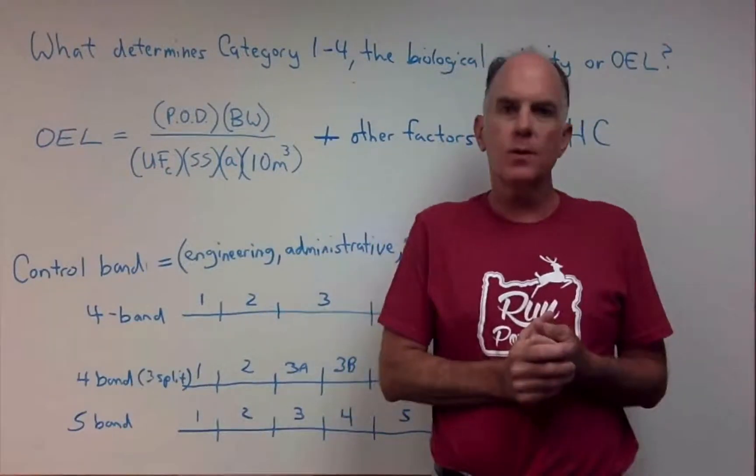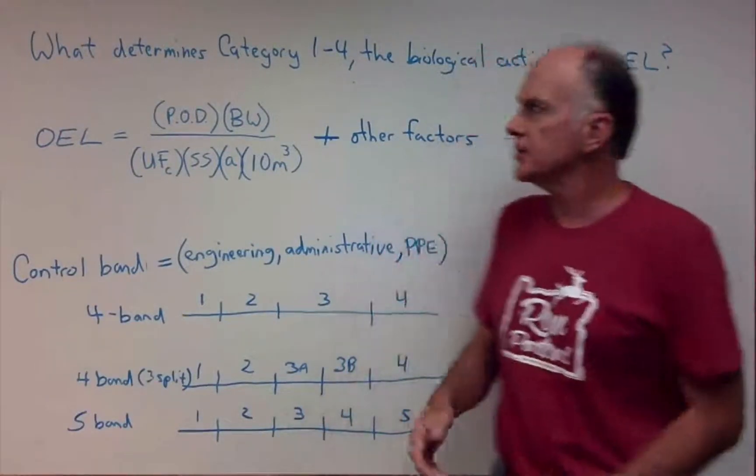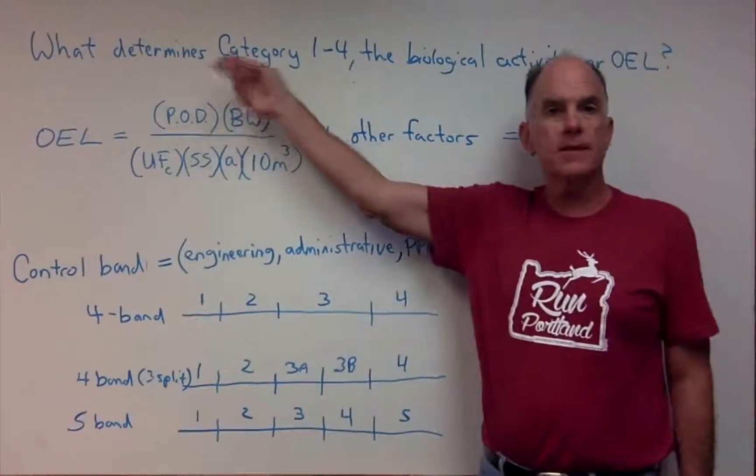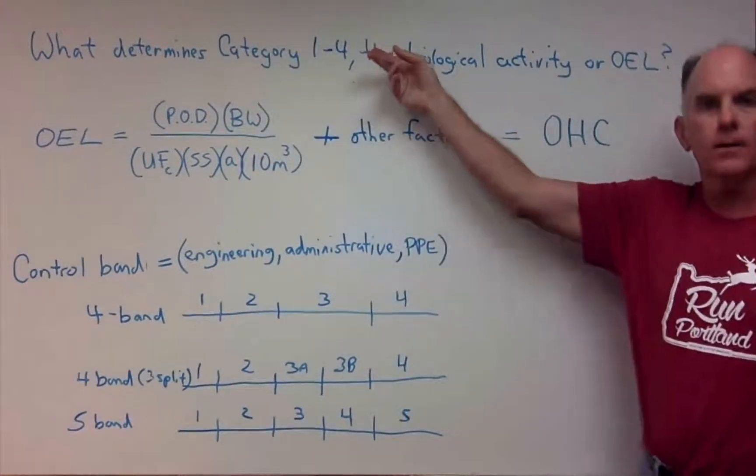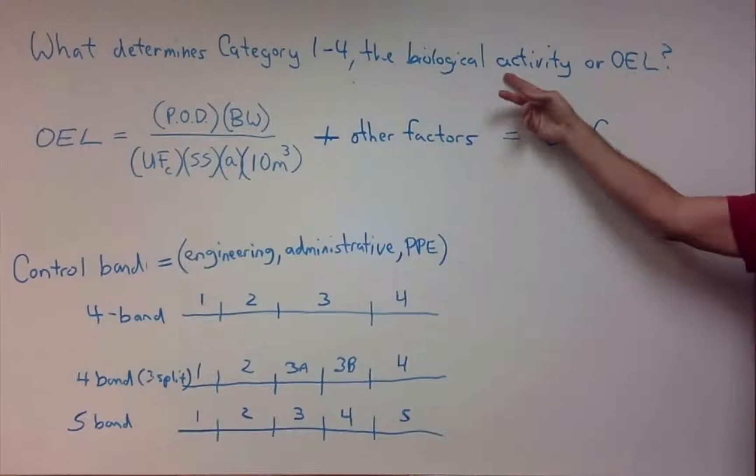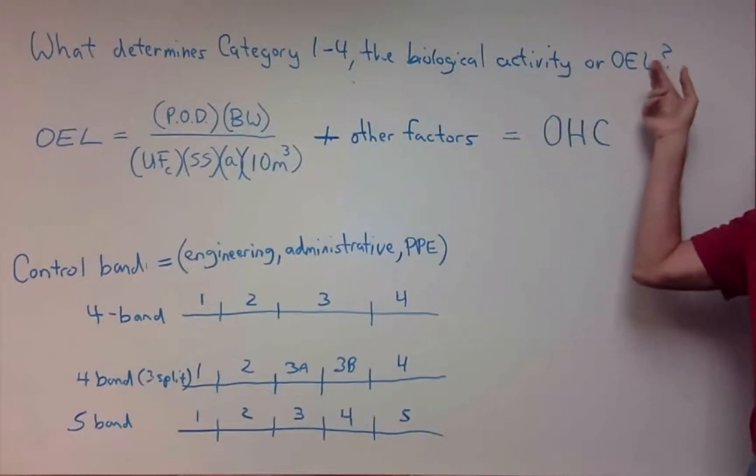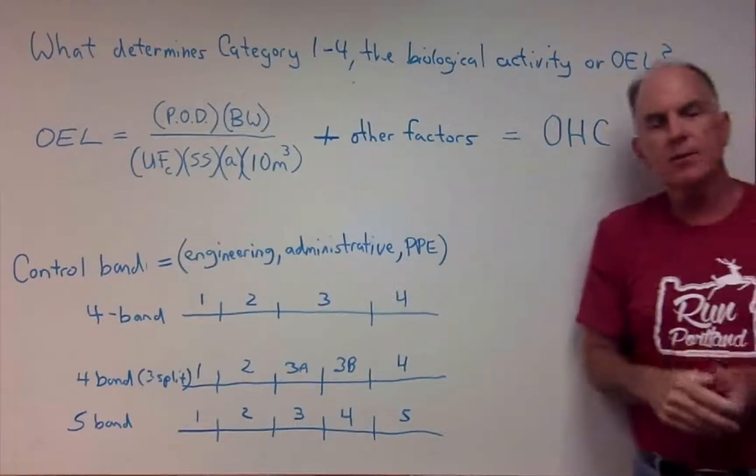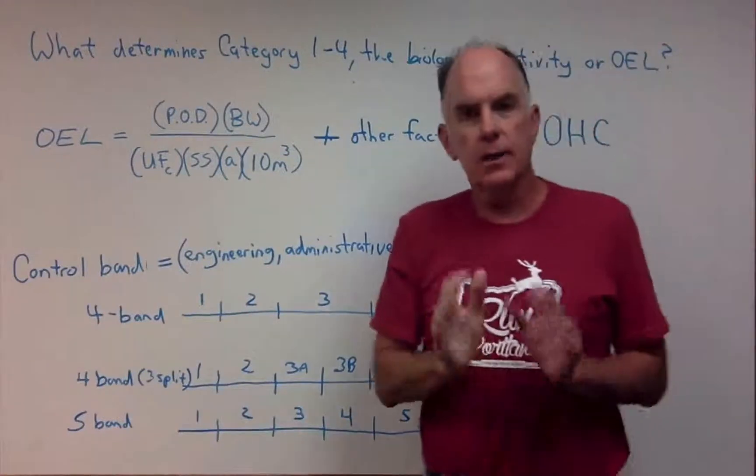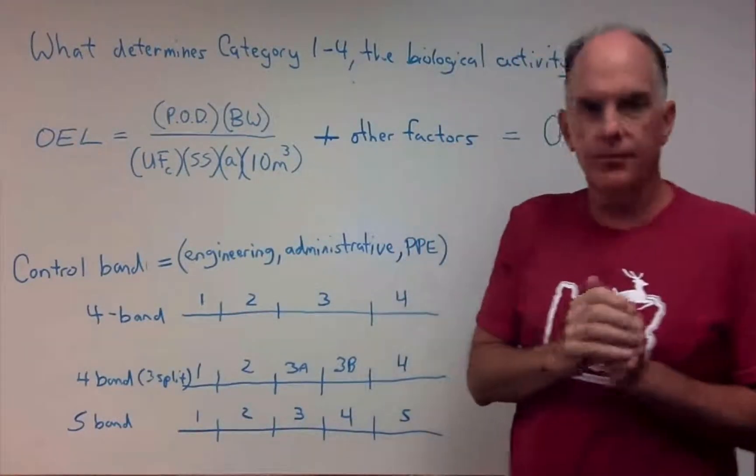Today we have a question from one of our listeners. The question is, what determines the category 1 through 4? Is it the biological activity or the OEL, or occupational exposure limit? Well, that's a very interesting question, but I want to make sure we understand things clearly.